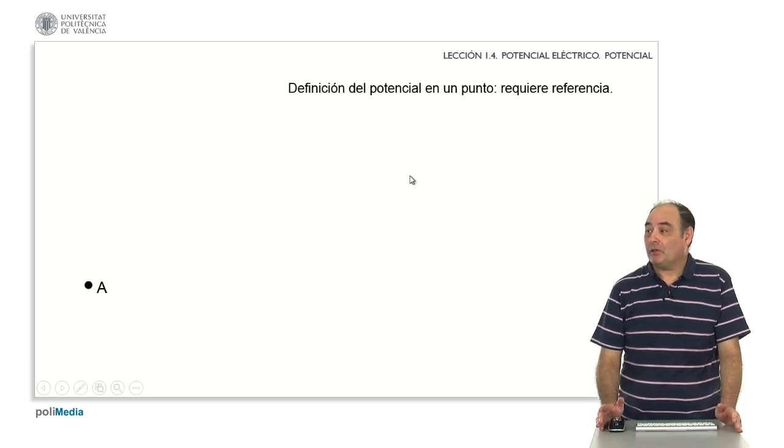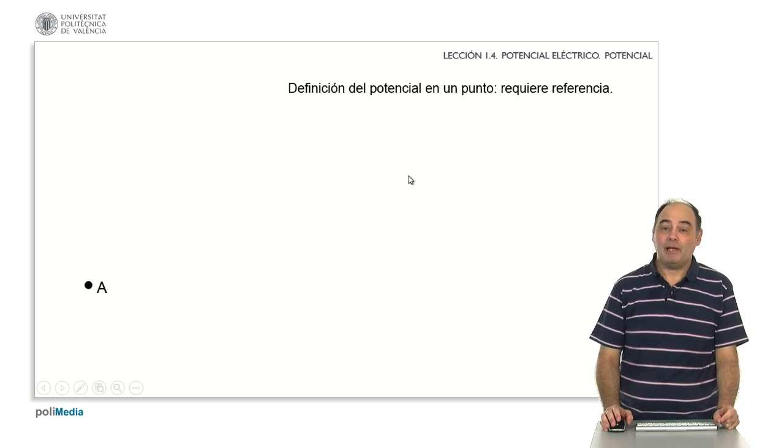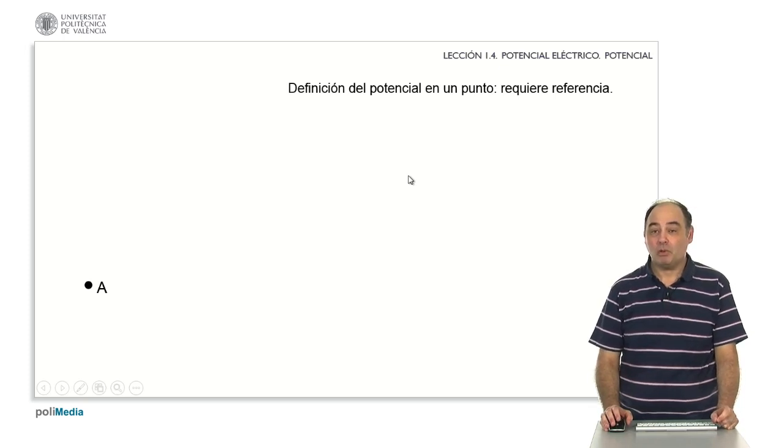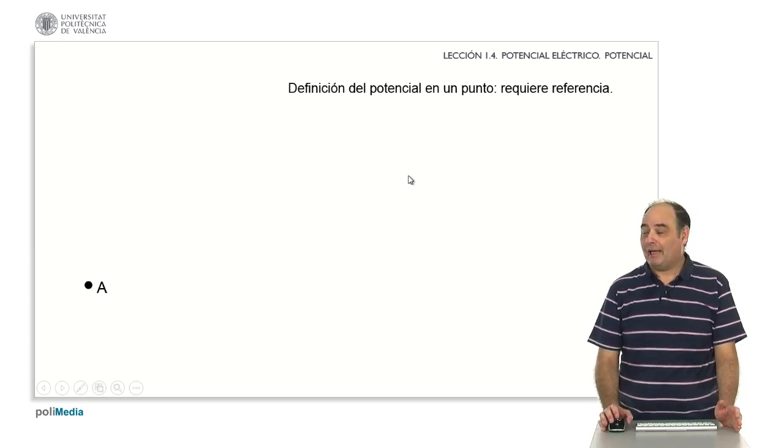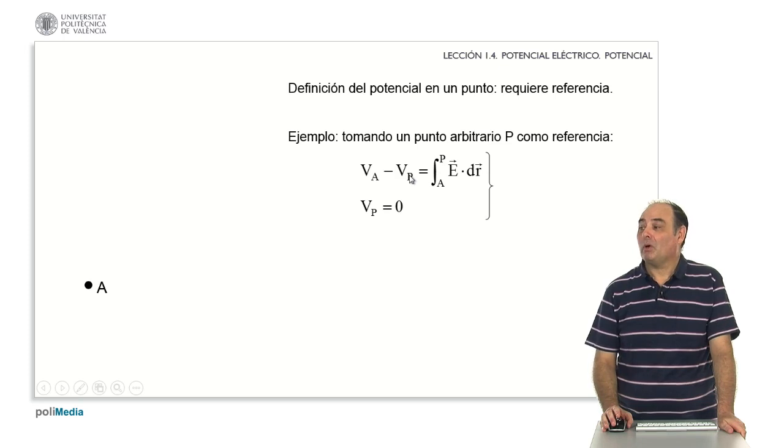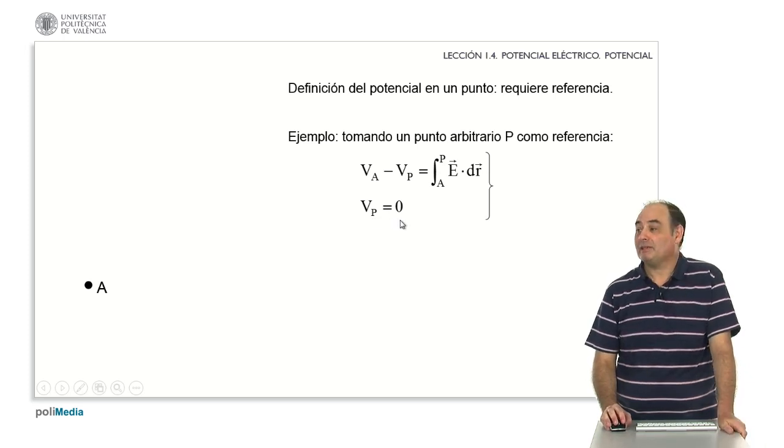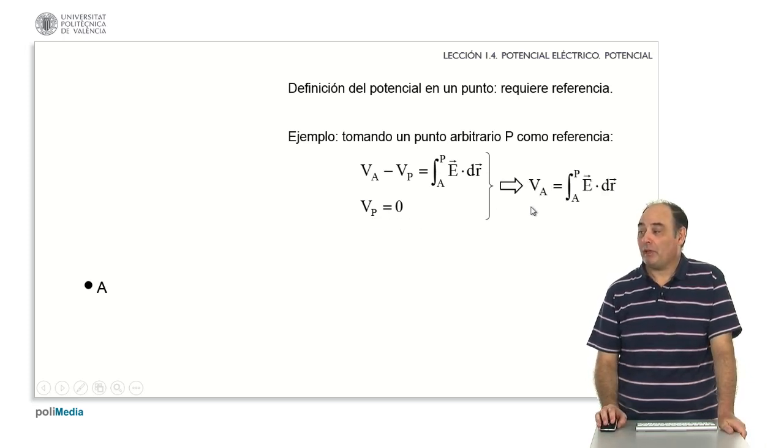And what is potential? We have talked about difference, but we have not talked about potential in concrete. And that is because there is no concrete value. We need a reference. For example, that we take an arbitrary point P as a reference. In that case, we would say that V_P will be the integral. And if we take as reference that the potential at P arbitrarily is zero, we can already define the potential at any other point as the integral until we reach P.